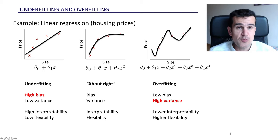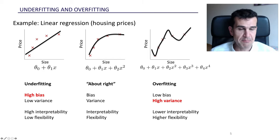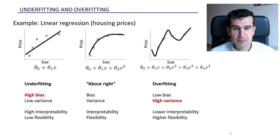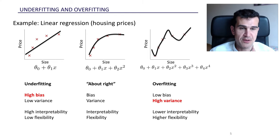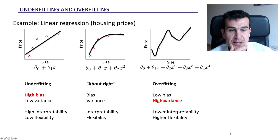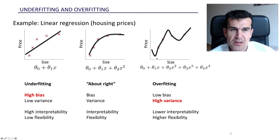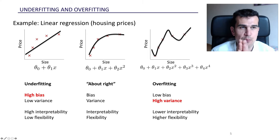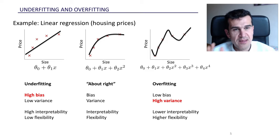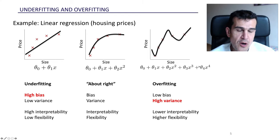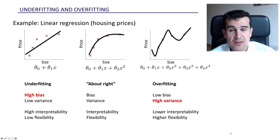Overfit models have low bias — there's no preconception; the model is really flexible and adapts perfectly to the data. On the other hand, they have very high variance: if we fit this model to another training set, we'd probably get a completely different curve. Every time we use the model on a new training set, it changes a lot — it's all over the place. These highly complex models tend not to be very interpretable, though they are highly flexible.